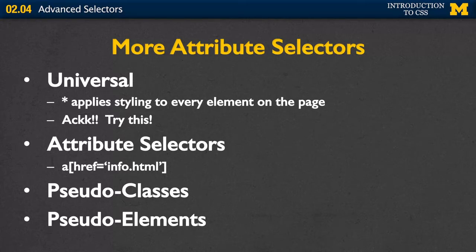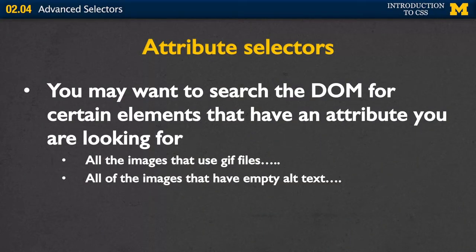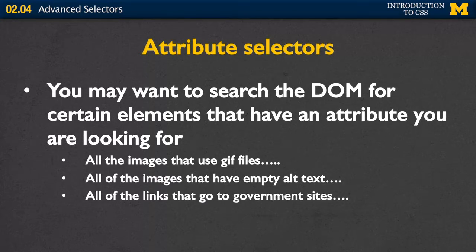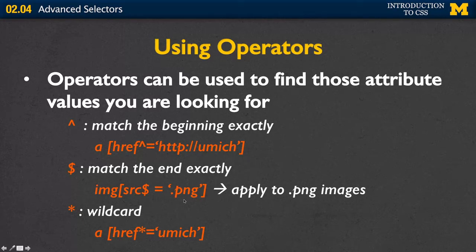Attribute selectors search the DOM for elements that have the attribute you're looking for. You might want to find all images using GIF files, all images with empty alt text, or all links going to government, nonprofit, or educational sites. Operators are used to match different parts of the attribute value. The caret (^) matches the beginning — for instance, all links that start with http umich. The dollar sign ($) matches the end — every file ending in .png. The wildcard (*) matches anywhere — if umich appears anywhere in any href, apply this rule.